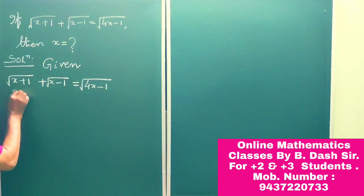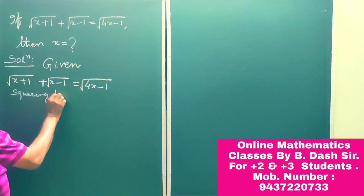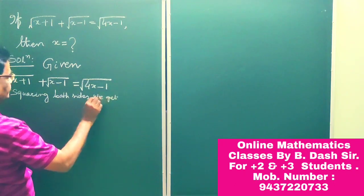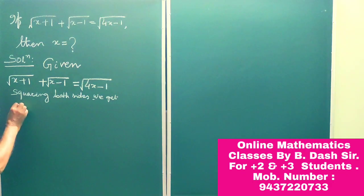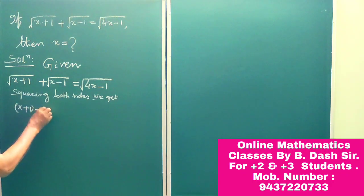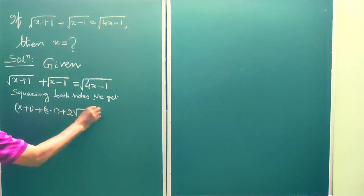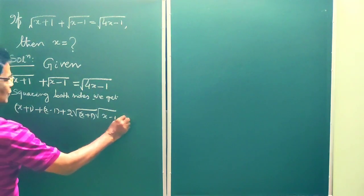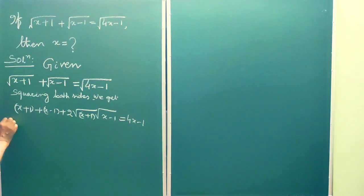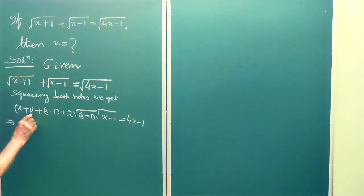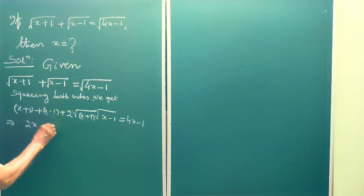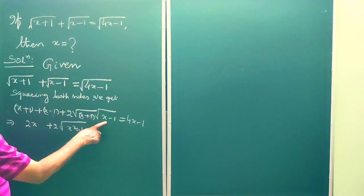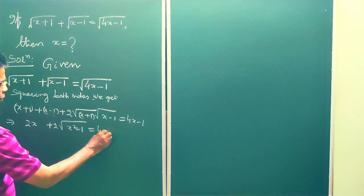First of all, squaring both sides. This gives us (x plus 1), this one is (x minus 1), and this is 2 root over (x plus 1)(x minus 1) is equal to 4x minus 1. This implies 2x plus 2 root over (x squared minus 1), since (x plus 1)(x minus 1) equals (x squared minus 1), is equal to 4x minus 1.